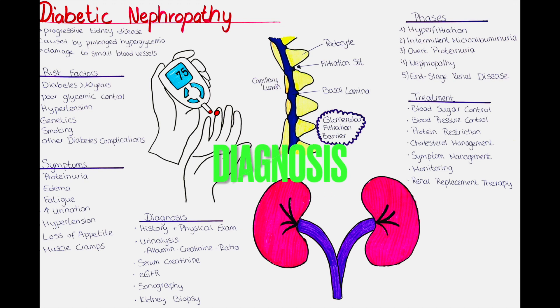How can we diagnose diabetic nephropathy? The diagnosis involves a combination of medical history, physical examination, and various tests to assess kidney function and detect signs of kidney damage. We usually start by taking a detailed medical history, including any history of diabetes and related complications. We want to pay special attention to patients that have been diagnosed with diabetes over 10 years ago, and will also inquire about symptoms that may suggest kidney damage, such as edema, changes in urinary patterns, and fatigue.